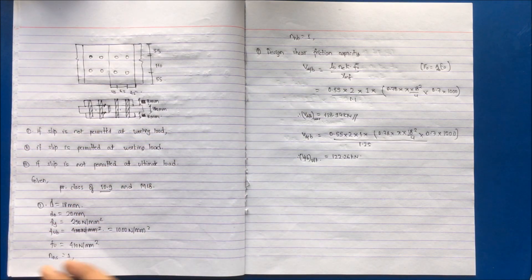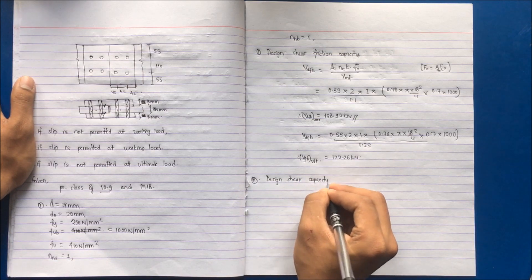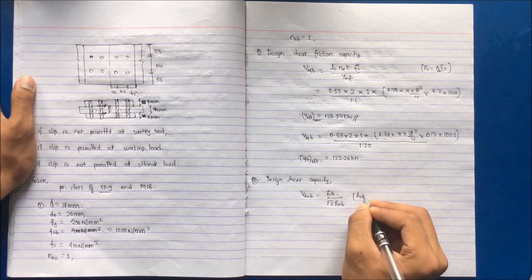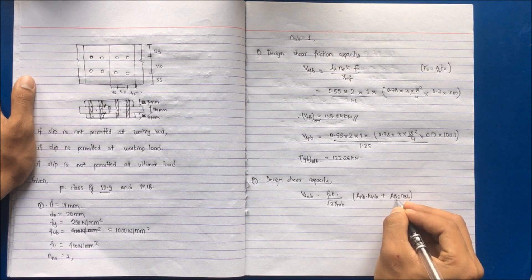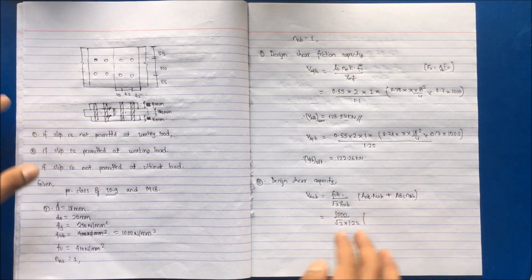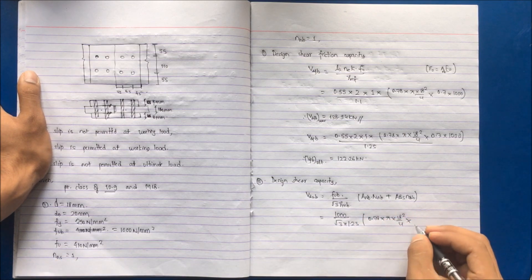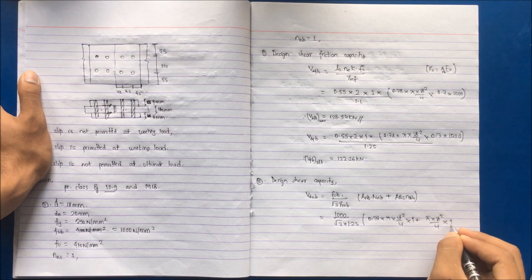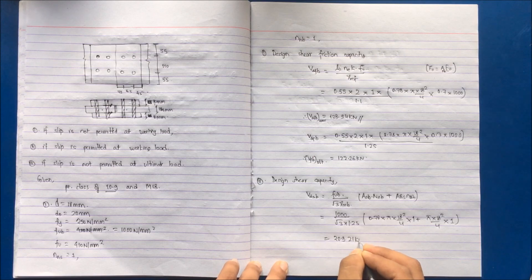The second step is to calculate design shear capacity VDSB = FUB / (√3 × γMB) × (Anb × nnb + Asb × nsb). Substituting values: FUB = 1000, γMB = 1.25, the threaded area Anb = 0.78 × π × d² / 4 with one shear plane intercepting thread, and shank area Asb = π × d² / 4 with one shear plane intercepting shank. This gives VDSB = 209.21 kN for a single bolt.